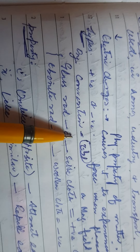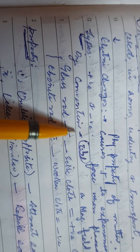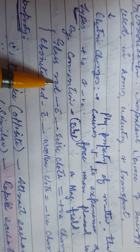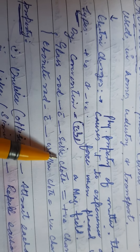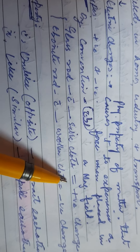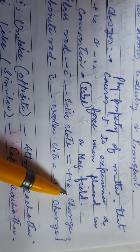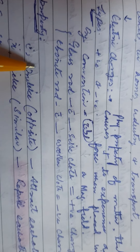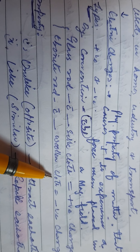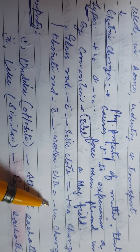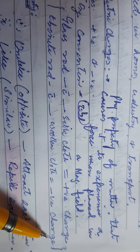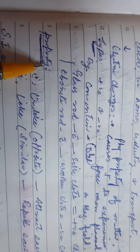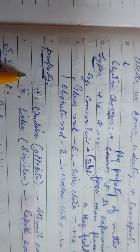By convention, if you take a glass rod and rub it with a silk cloth, the charge produced is positive charge. And if an ebonite rod is rubbed with a woolen cloth, the charge produced is negative charge.